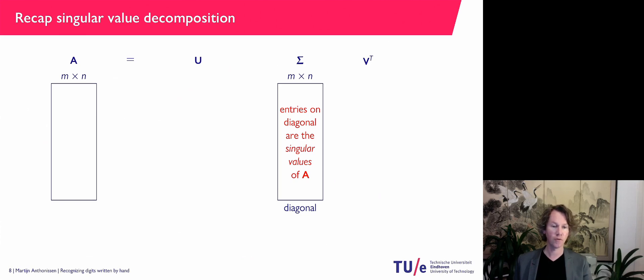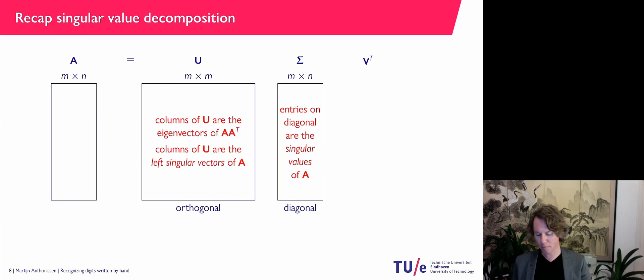Then the U matrix has the eigenvectors of A transpose as columns. And we have chosen them in such a way that they form an orthonormal system, the columns.